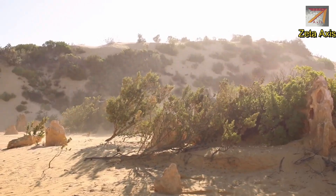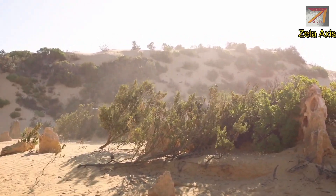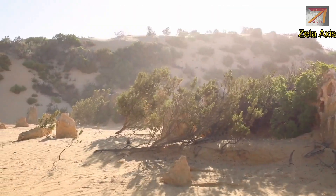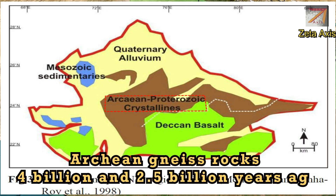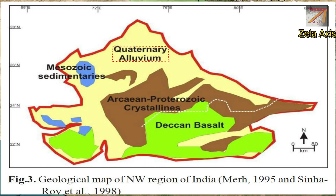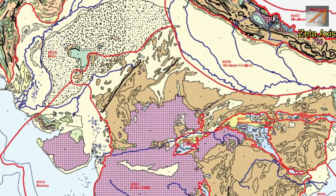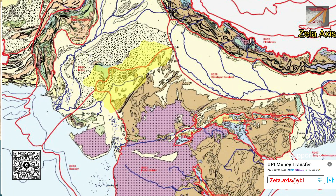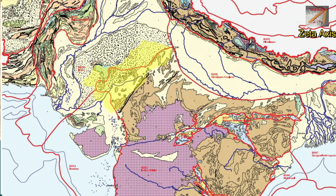The Marustali sand is wind-deposited and has accumulated over the past 1.8 million years. The Thar Desert lies over Archean gneiss rocks formed from 4 billion to 2.5 billion years ago, then Proterozoic sedimentary rocks formed between 2.5 billion and 541 million years ago, and more recent alluvium deposited by rivers flowing from the Himalayas. Marustali is actually an extension of the Peninsular Plateau, where the peninsular rocks are buried under wind-deposited sands.